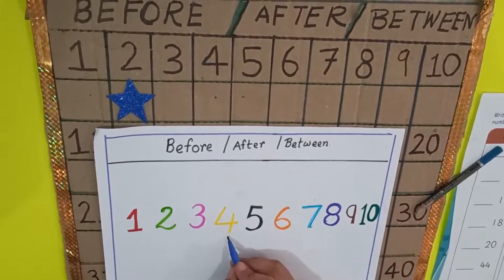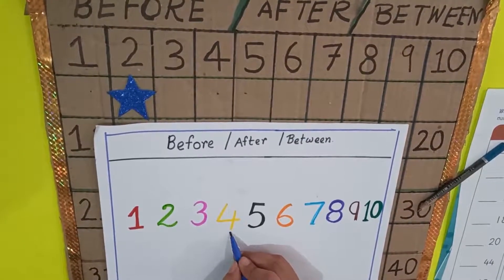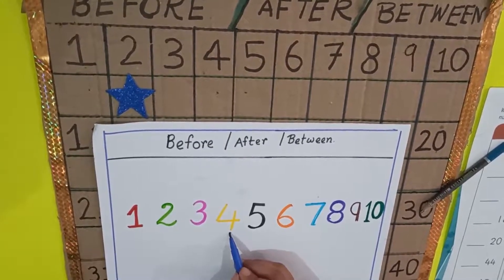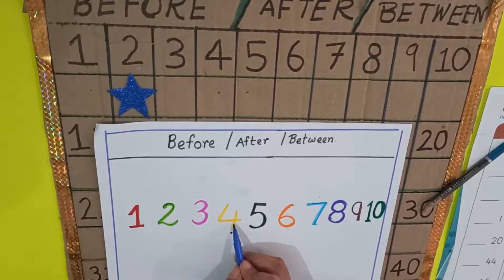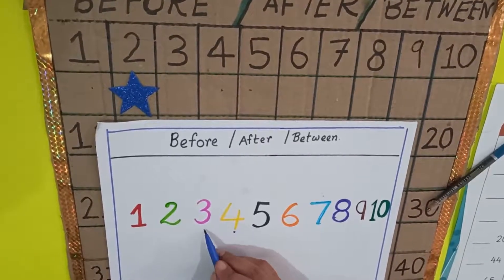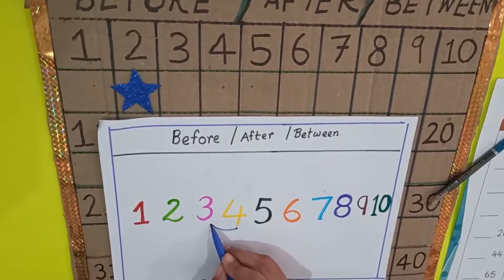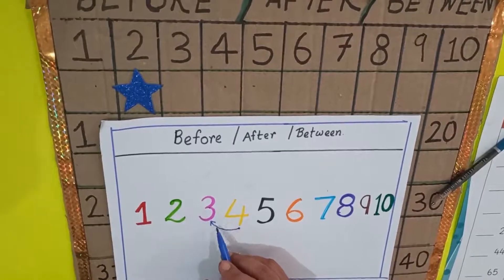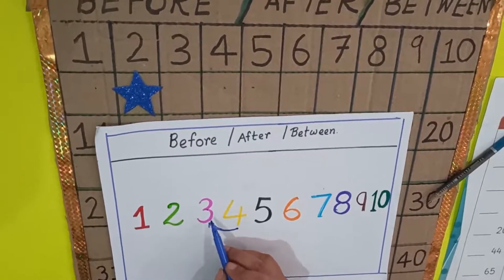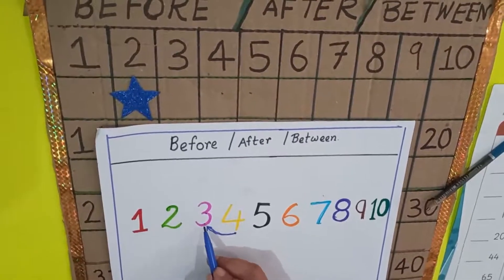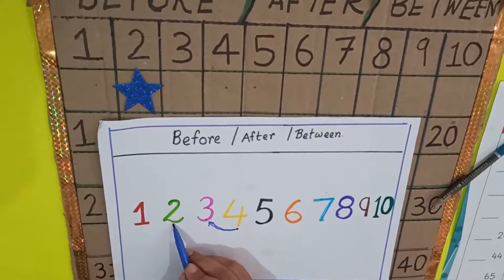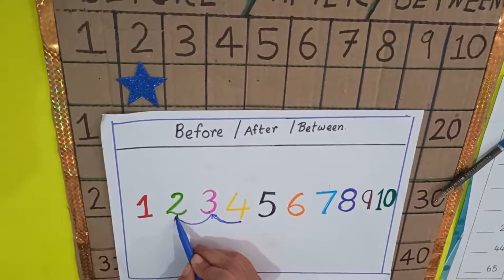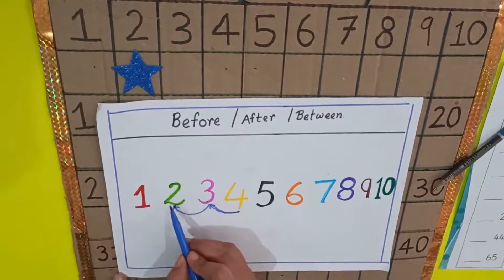Tell me, which number is this? This is number four, yellow color. Now, do you know what is before number four? Look here, going back — it is number three, pink color. Number three is before four. Now, what is before number three? Go back — it is number two. Like this, this is before.